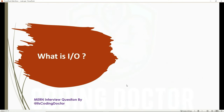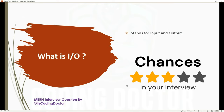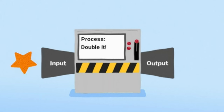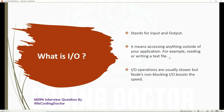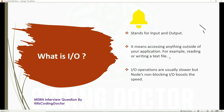The next question is: what is I/O? This is a very basic question, so you can expect it if you are a fresher. I/O stands for input and output — it means accessing anything outside of your application, for example reading or writing a text file. I/O operations are usually slower, but since Node.js is non-blocking and asynchronous, I/O speed is boosted.